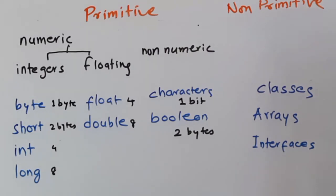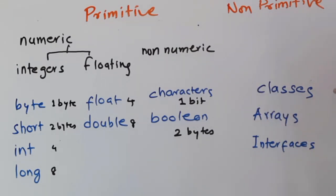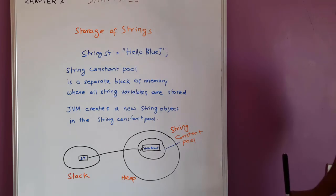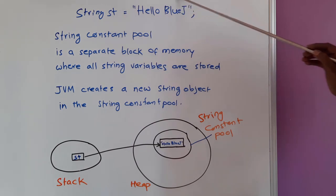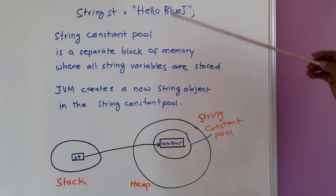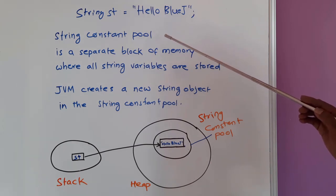Now let us look at non-primitive data types. Whenever we create an object from a class in Java, the class is considered a data type — called a reference data type. Classes, Arrays, and Interfaces are three reference data types in Java. They do not have a fixed amount of memory reserved — the memory allocation is decided at runtime according to the requirement of the program.